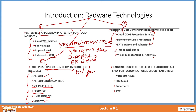Most of the solutions that they have are also cloud-ready. Radware has also enabled itself for all major popular cloud platforms available in the market. Radware solutions are available on Microsoft Azure Public Cloud, IBM Cloud, Kubernetes, as well as AWS Public Cloud.